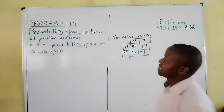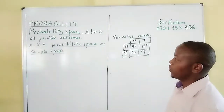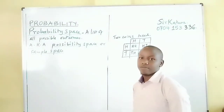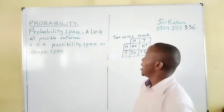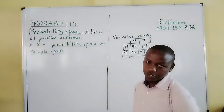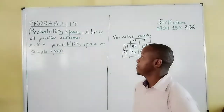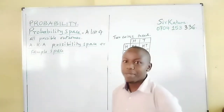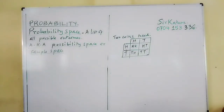This list of possible outcomes is what we are terming as a probability space, possibility space, or sample space of a given event. Our probability space can be used to help us calculate questions on probability, like the question I will give now.